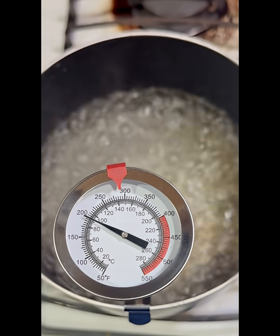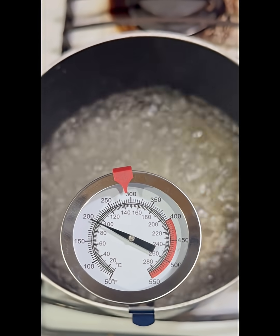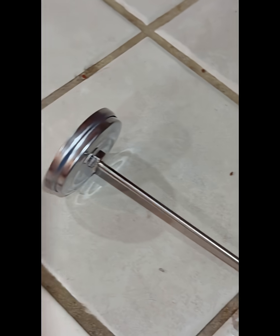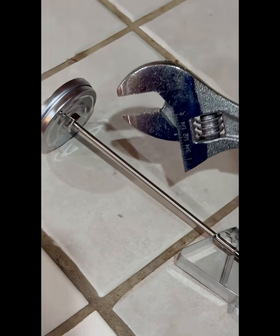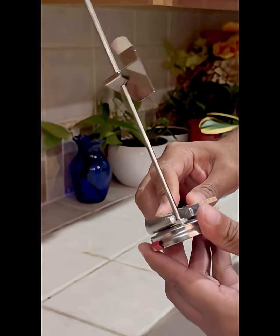In this example, the water is boiling, but the thermometer shows 200 Fahrenheit. Since boiling water at sea level should be 212 Fahrenheit, we'll adjust the dial by 12 degrees.